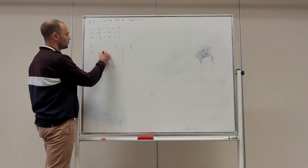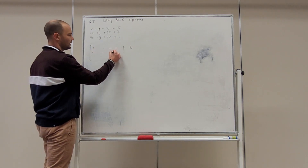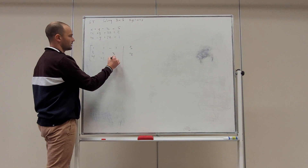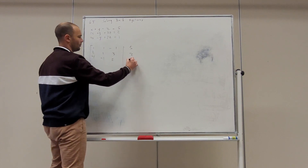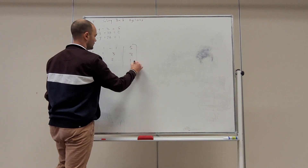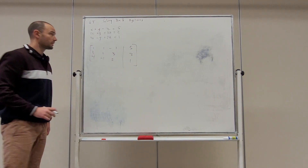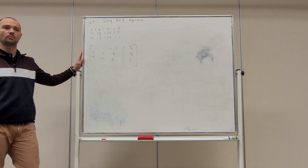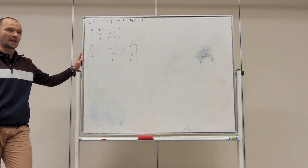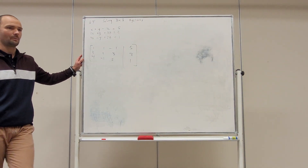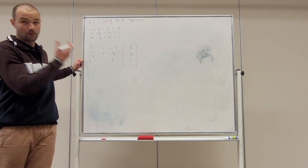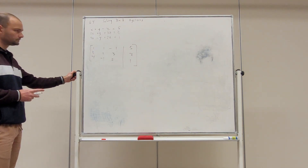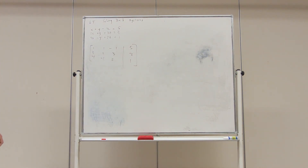We'll have 2, 1, 3, and 2. Then 4, minus 1, 2, and 1. So this is the system of equations stated in what we call row echelon form, where we've abstracted just the coefficients of each variable.